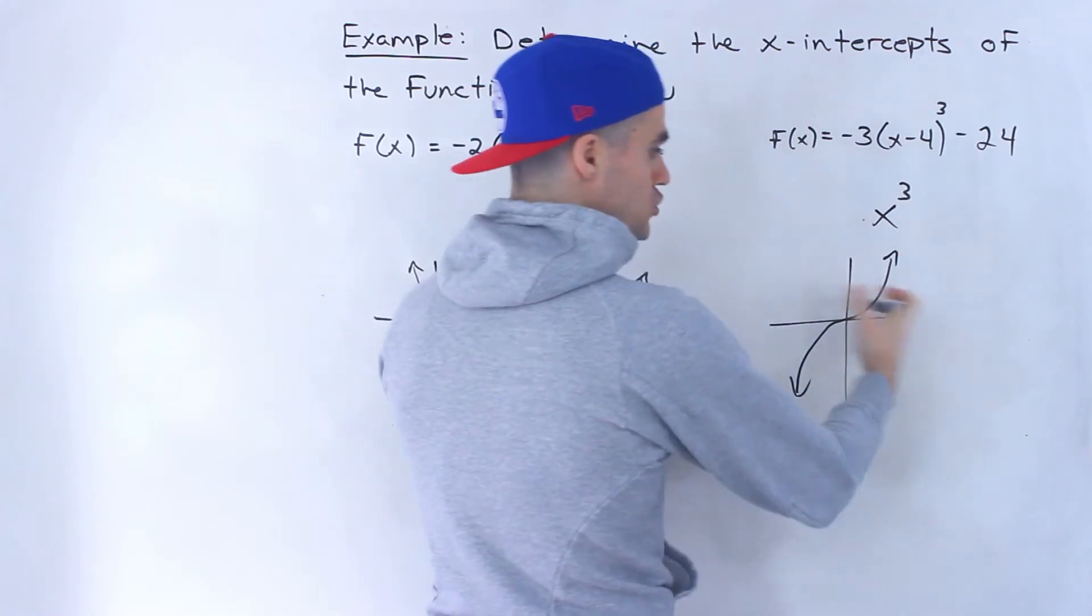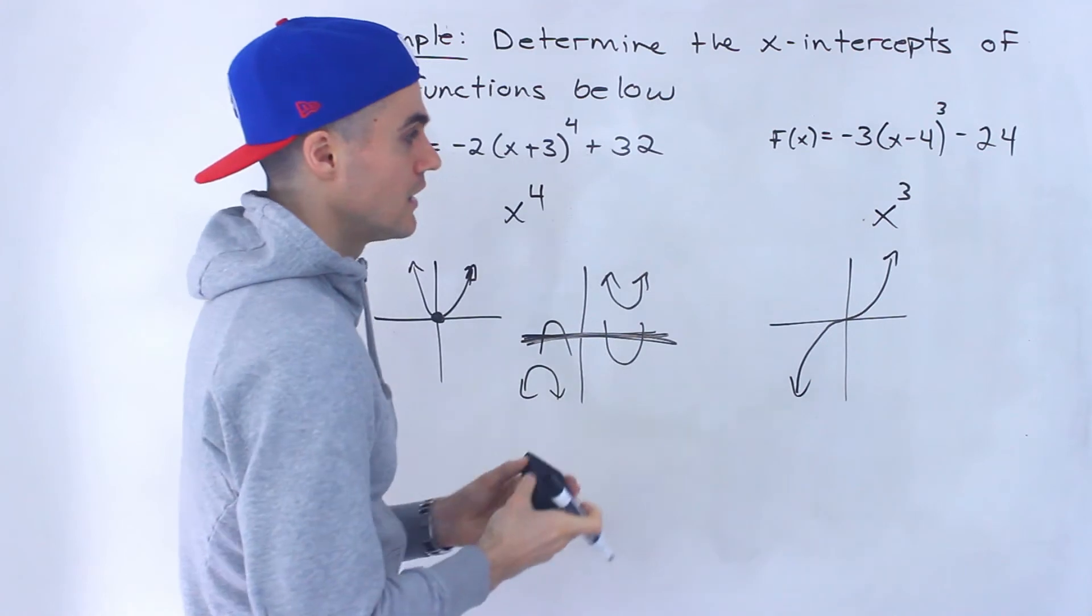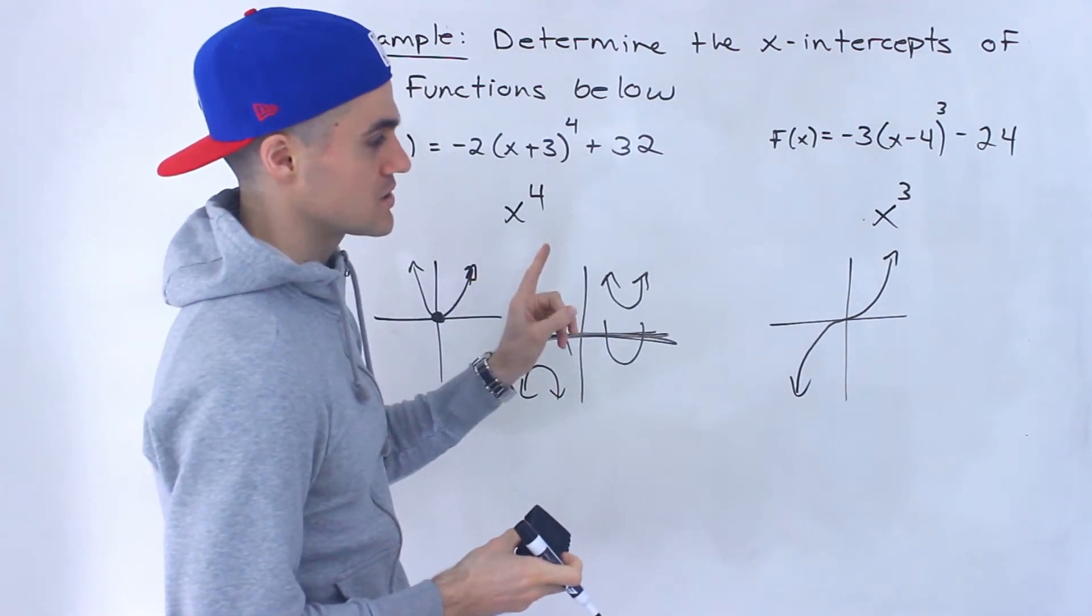So no matter how we transform this, flip it, shift it left or right, shift it up or down, there's always going to be one x-intercept.